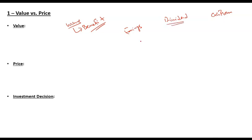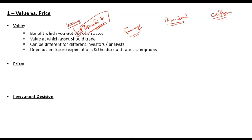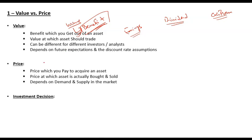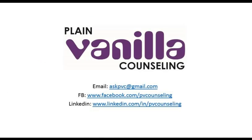If you are only receiving dividends, then dividends are the benefit. If the company generates cash flows but no dividend, those cash flows are the benefit. If earnings exist but haven't converted to cash flows due to temporary reasons, earnings become the benefit. You must first identify the type of benefit, calculate it, and then compare that value with the market price to make an investment decision.